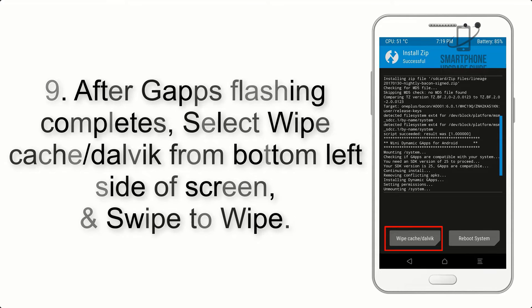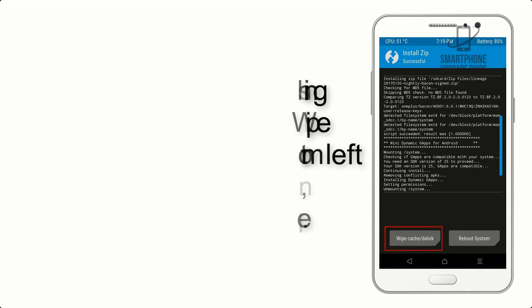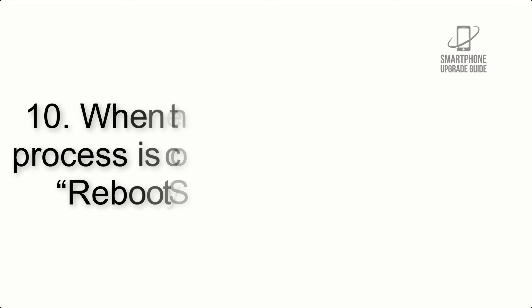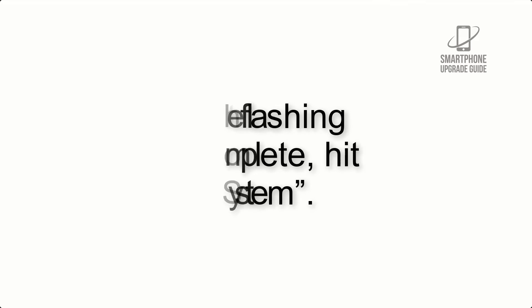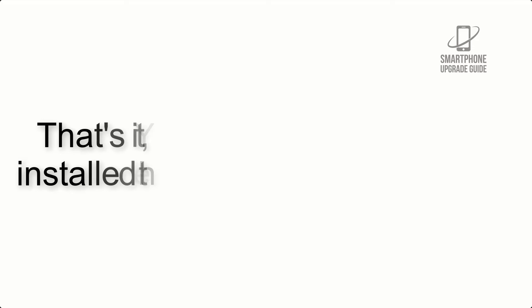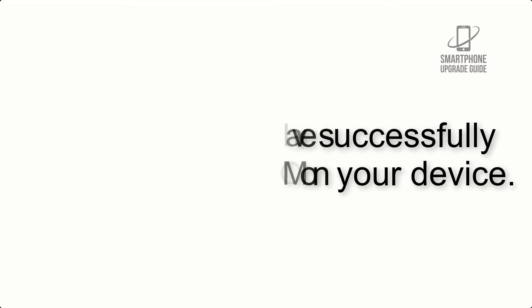Step 8: Flash the gapps zip package in the same manner. Step 9: After gapps flashing completes, select Wipe Cache and Dalvik from the bottom left side of the screen and swipe to wipe. Step 10: When the flashing process is complete, hit Reboot System. That's it — you have successfully installed the ROM on your device.